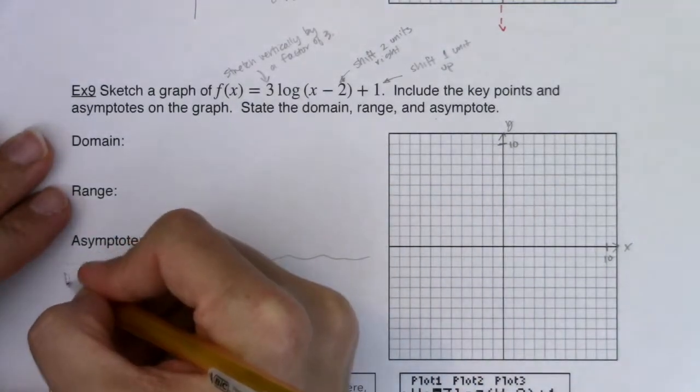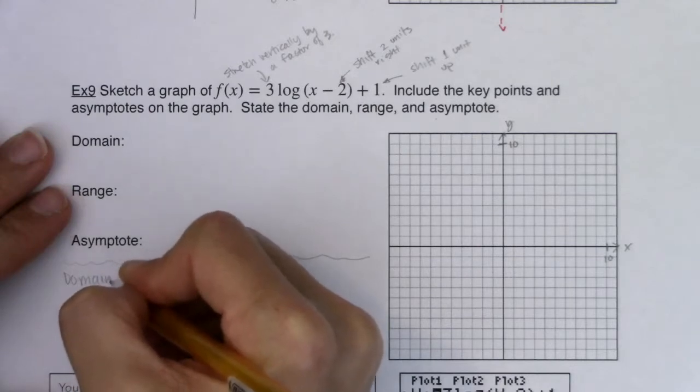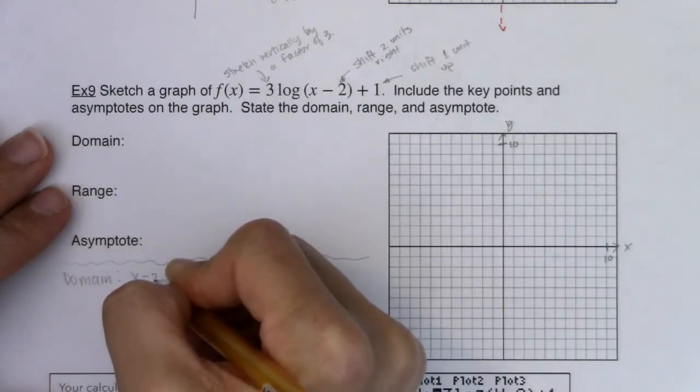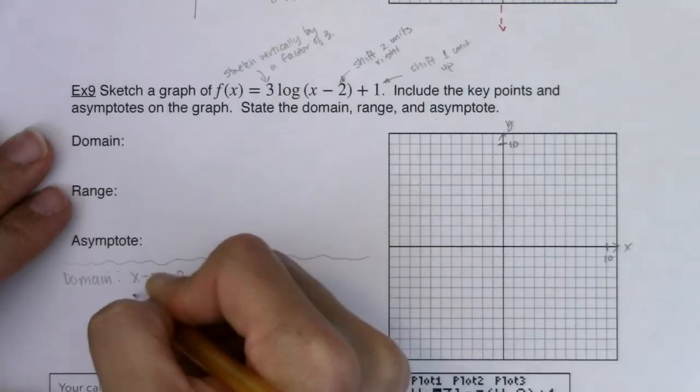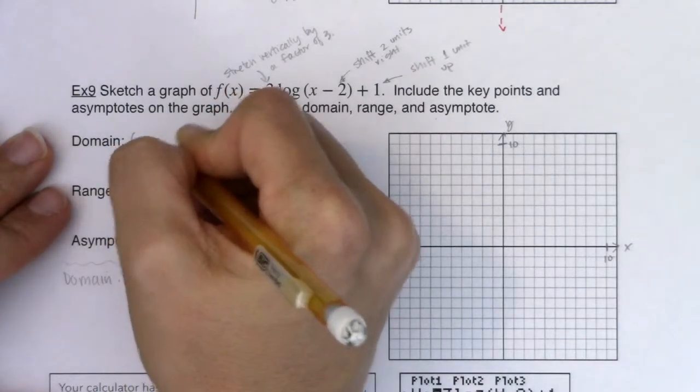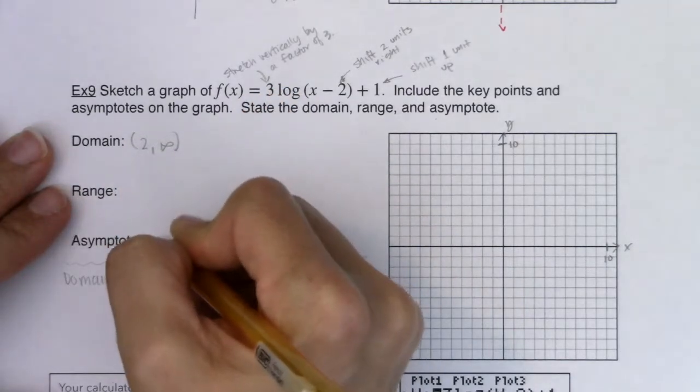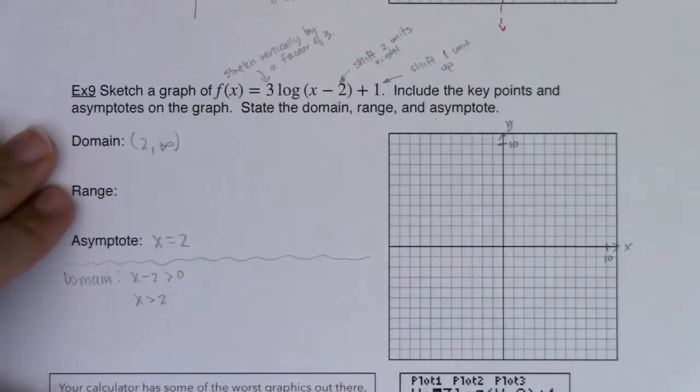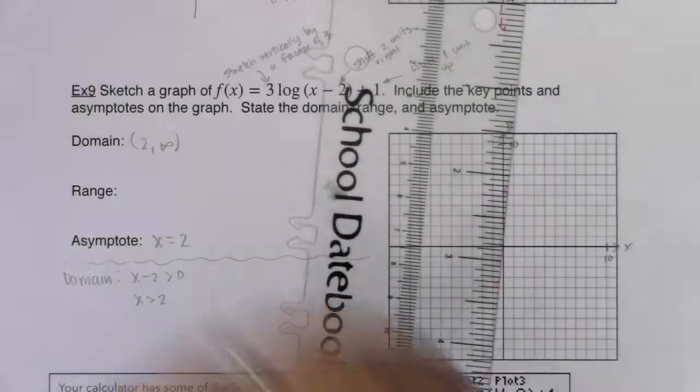Let's start with our domain, always the place to start. I need x minus 2 to be greater than 0. That's going to occur when x is greater than 2. So I'm going to say 2 to infinity, and then my vertical asymptote is going to be x equaling 2. So let me go get that on the graph.